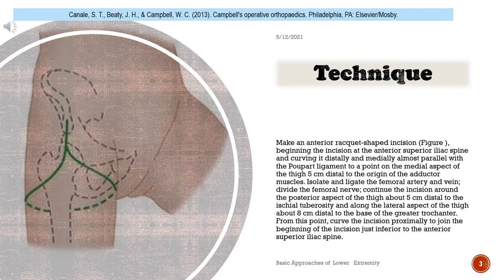Make an anterior racket-shaped incision, beginning at the anterior superior iliac spine and curving it distally and medially almost parallel with the Poupart ligament to a point on the medial aspect of the thigh 5 cm distal to the origin of the adductor muscles. Isolate and ligate the femoral artery and vein, and divide the femoral nerve.